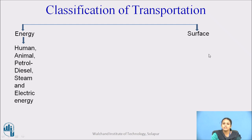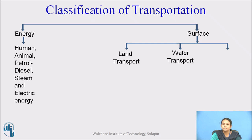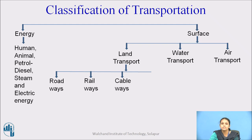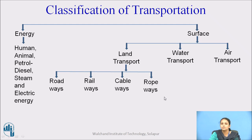Surface transportation is further classified as land transport, water transport, and air transport. Land transport is further classified into roadways, railways, cableways, and ropeways — where cableways and ropeways come under spatial ways of transportation. Water transportation is further divided into riverways, canalways, and seaways.